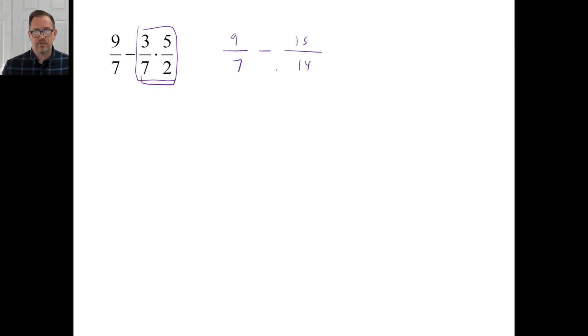Common denominator of seven and 14 is going to be 14. So let's make the first one 14. Seven times two. Nine times two is 18. 18 minus 15 fourteenths is 3 fourteenths. Piece of cake.